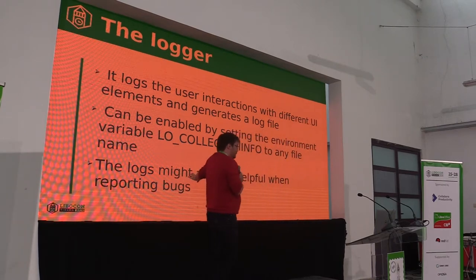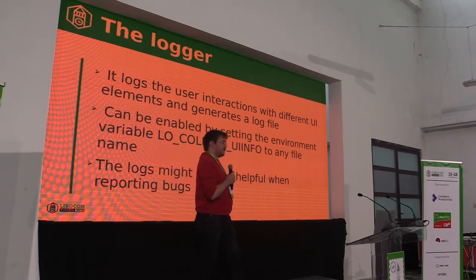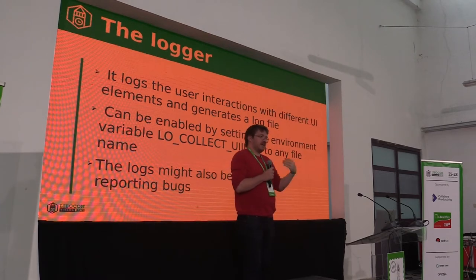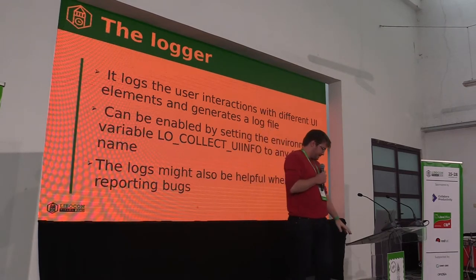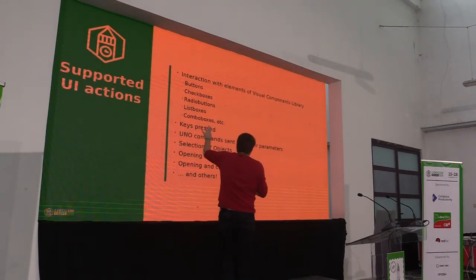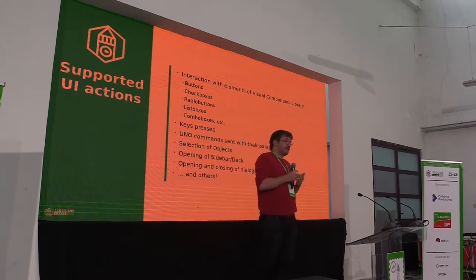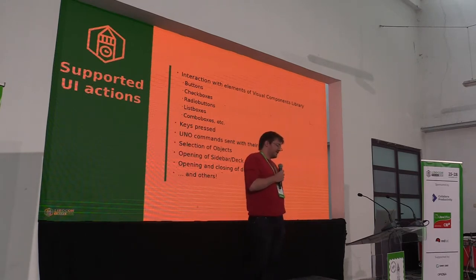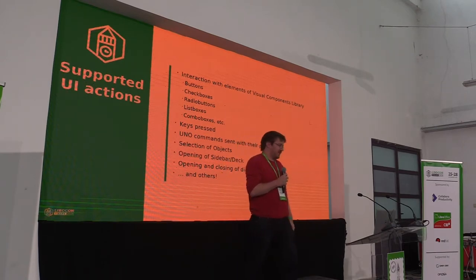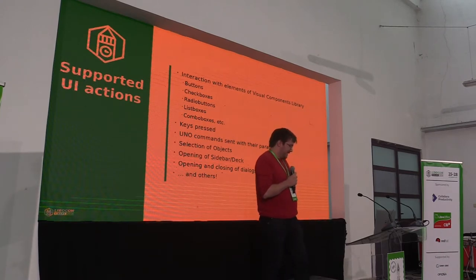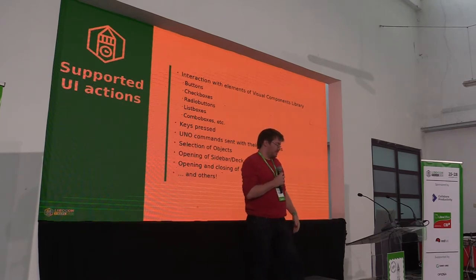In the future, this could also be really helpful when you want to report a bug — you set the environment variable, do the actions that show the bug, and the developer on the other side can just replay the logged actions. Many UI elements are covered, like list items, buttons, checkboxes, and so on. Key presses are not enabled in all builds — for those builds, we don't want any way to log keys, to avoid logging passwords or something similar. Menu commands are logged with their parameters, covering any interaction with menus. Some selection of objects is covered, like selecting a shape, and the sidebar is covered, as well as opening and closing of modals and dialogs.